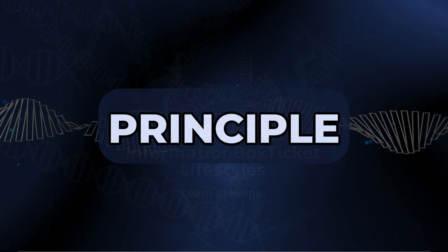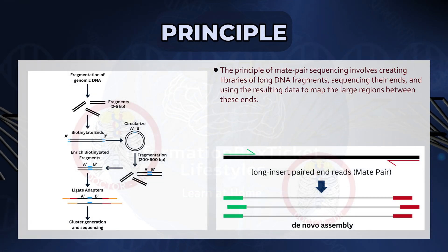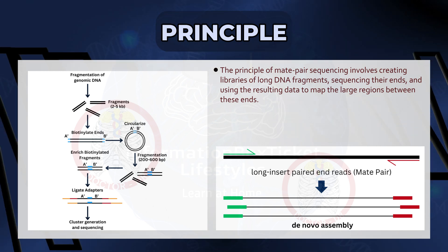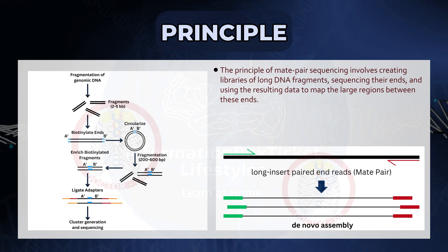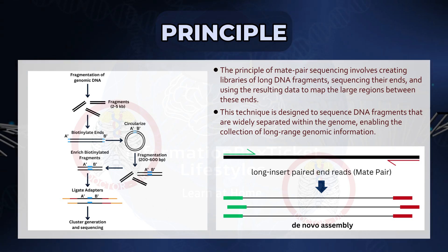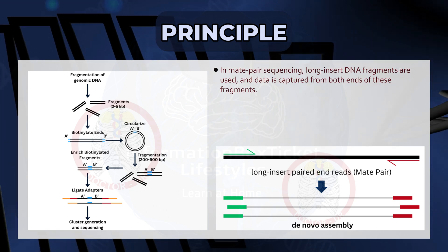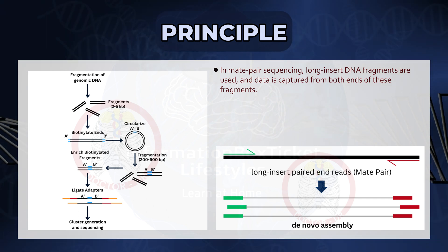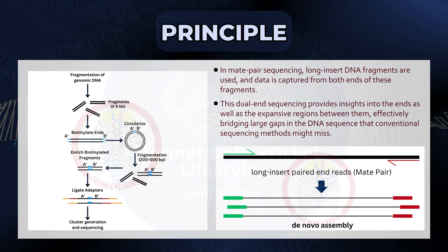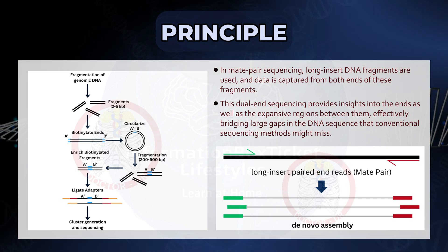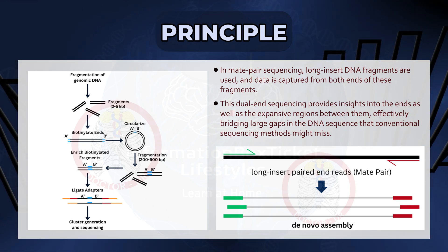The principle of mate pair sequencing involves creating libraries of long DNA fragments, sequencing their ends, and using the resulting data to map the large regions between these ends. This technique is designed to sequence DNA fragments that are widely separated within the genome, enabling the collection of long-range genomic information. In mate pair sequencing, long-insert DNA fragments are used, and data is captured from both ends of these fragments, providing insights into the ends as well as the expansive regions between them, effectively bridging large gaps that conventional sequencing methods might miss.